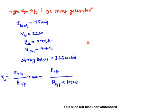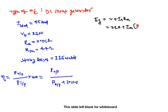Looking at the data: stray losses are 375 watts, and armature resistance is 0.01 ohms. We need to find the generated EMF (Eg) first. Eg = Vt + Ia × Ra = 220 + Ia × 0.01. However, in this equation we don't know the value of armature current Ia, so let's calculate that first.